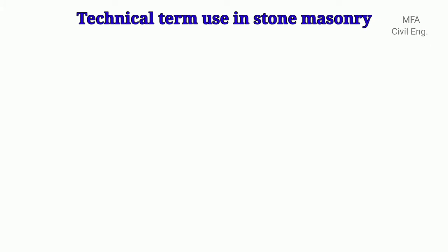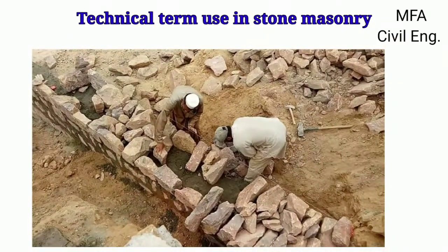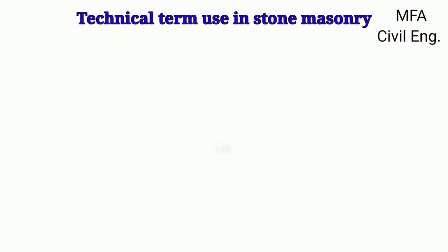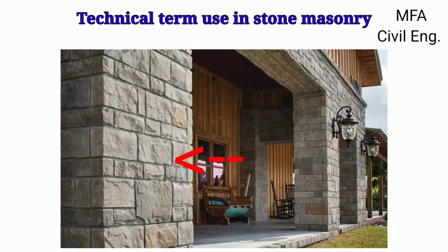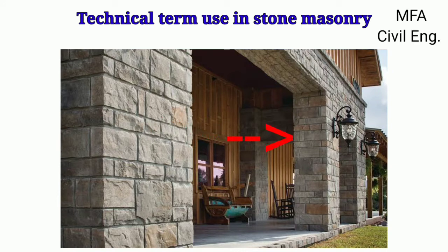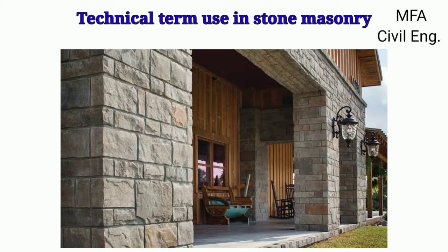Hello everyone, my name is Vazal and you are watching MFA Civil Engineering. We are going to learn various technical terms used in stone masonry one by one. The exterior of a wall exposed to the weather is called the face, and the material used in the face of a wall is called the facing. The inner surface of a wall which is not exposed to the weather is called the back, and the material used in the back of the wall is called the backing.